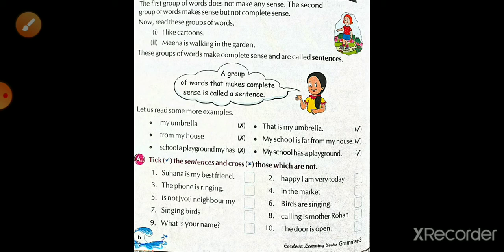Eight, calling is mother Rohan. Nine, what is your name? Ten, the door is opened. So, यह ten sentence में से, जो words का group है, उसमें से हमें completely उसका sense पता चल जाता है, तो वो sentence है. तो उसके सामने आपको right का mark करना है, और जिससे कोई sense पता चलता नहीं है, वहां पर आपको cross out करना है.